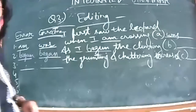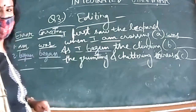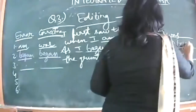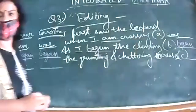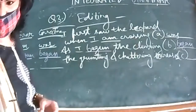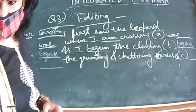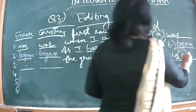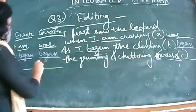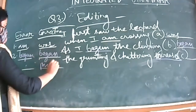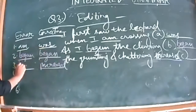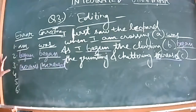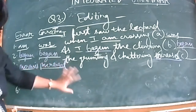For the third one, in place of 'increases' it is 'increased.' So now you know how to do editing. Is it clear? Send me feedback — thumbs up — so I know you understand how to attempt grammar in the subjective paper.